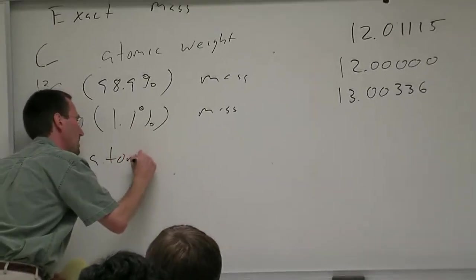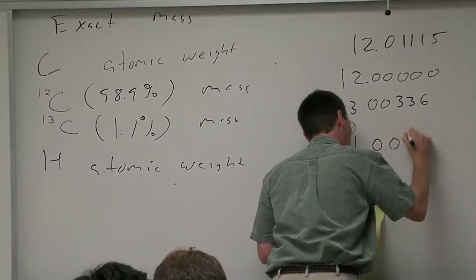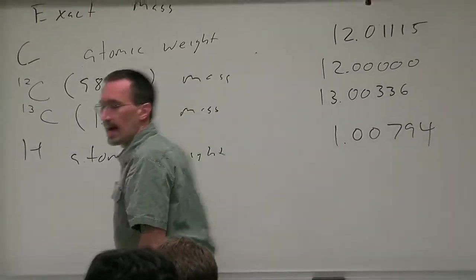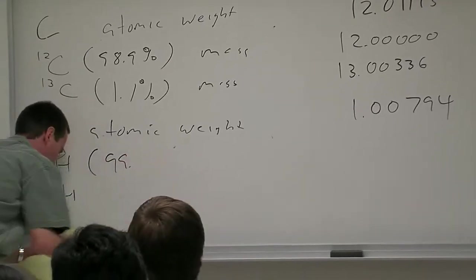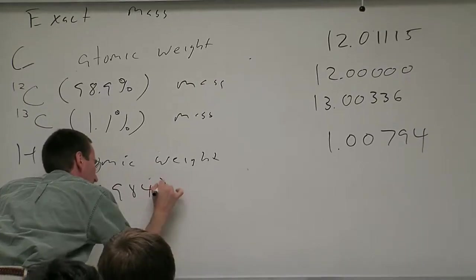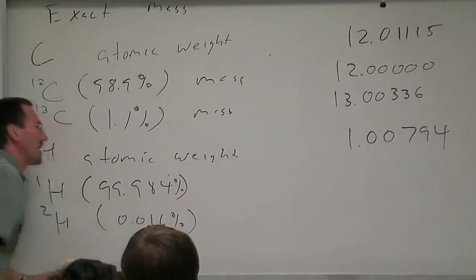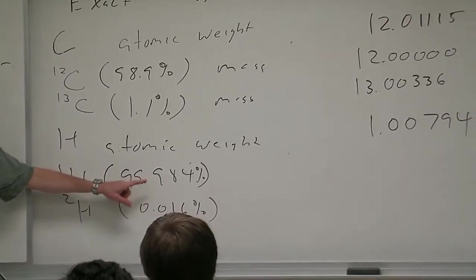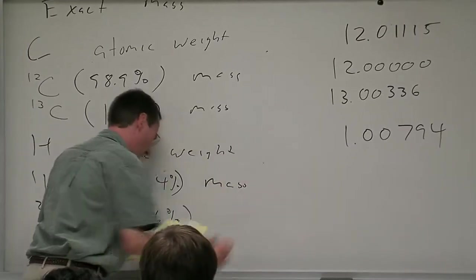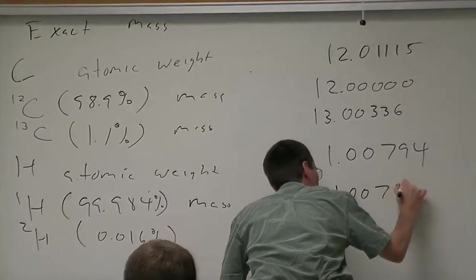You're separating your molecules isotopomer from isotopomer, so you're going to get a peak that corresponds to the isotopomer that's all C12. Hydrogen for example, the atomic weight in the periodic table is 1.00794, and yet hydrogen is a mix of hydrogen and deuterium. It's mostly hydrogen, 99.984% H1 and only 0.016% H2.